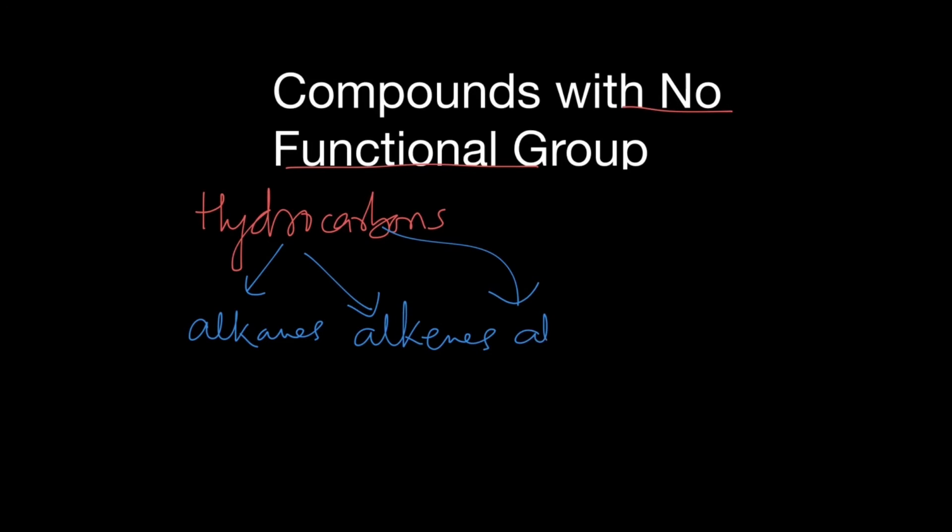So to begin with, there are some compounds that do not have any functional group inside them. What are those compounds? First we have hydrocarbons, yes hydrocarbons that include alkanes, alkenes and alkynes. All these compounds do not have any functional group inside them.